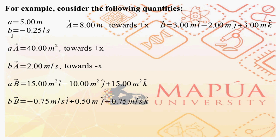First, let's multiply scalar A with vector A. You multiply the magnitude of vector A by the magnitude of scalar A — that's 5 times 8, which is 40. Note the units: meter times meter gives meter squared, so 40 meters squared is the magnitude of the vector answer. Scalar A is positive, so the direction will be the direction of the original vector A unchanged — towards positive x. So A times vector A gives you 40 meters squared towards positive x.